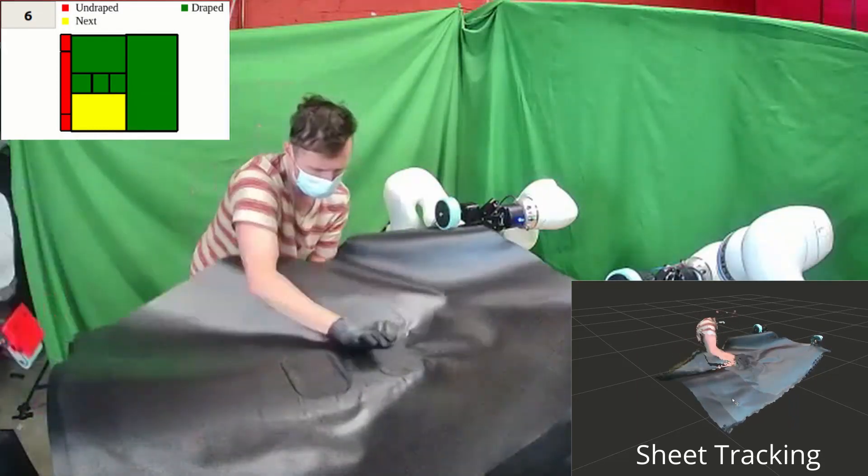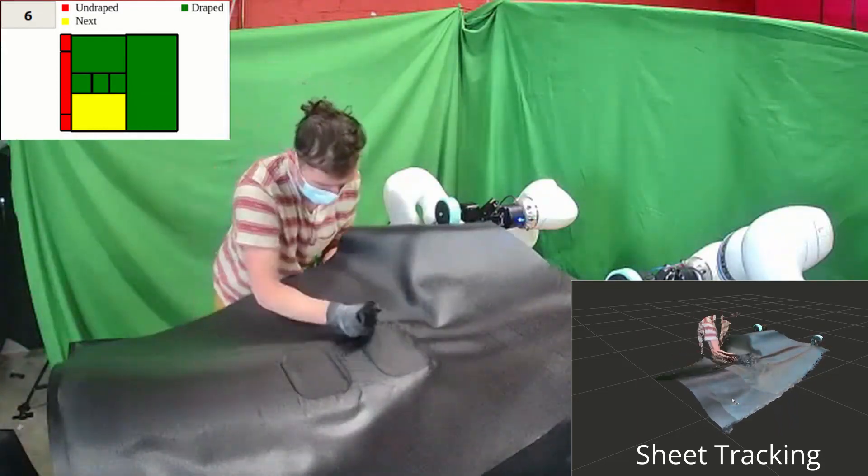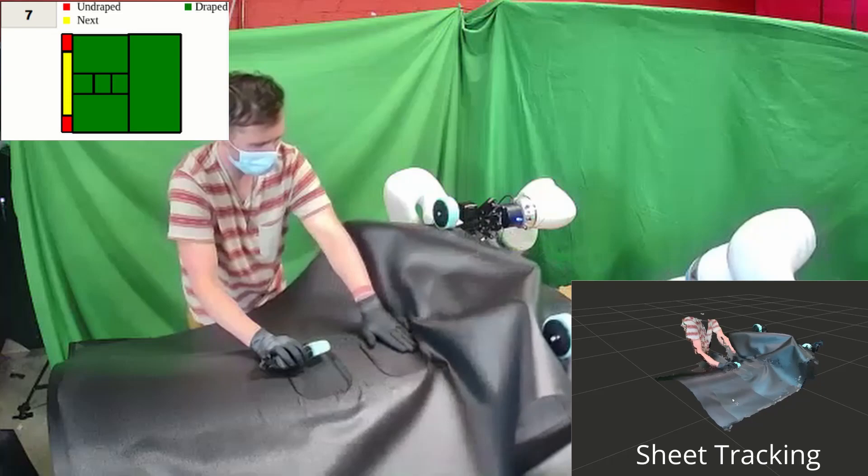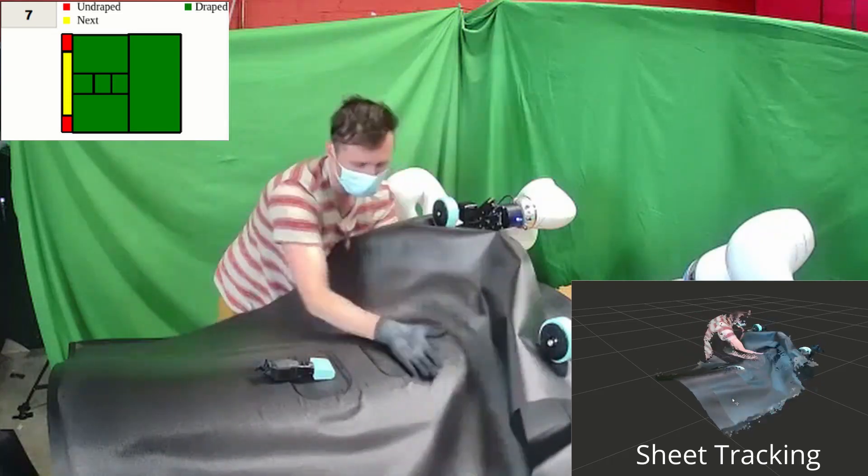During execution, the operator can interact with the system using predefined hand gestures. These gestures function as a signal for region change.